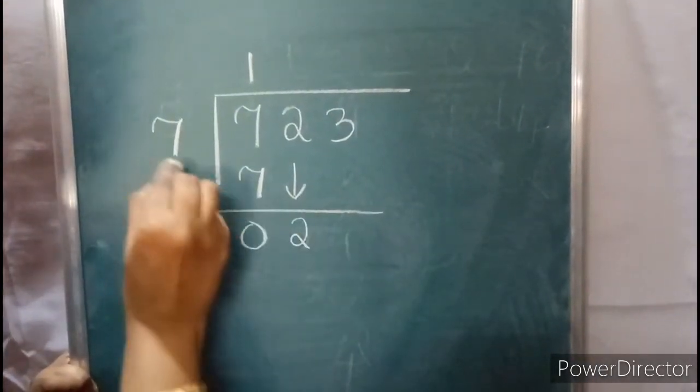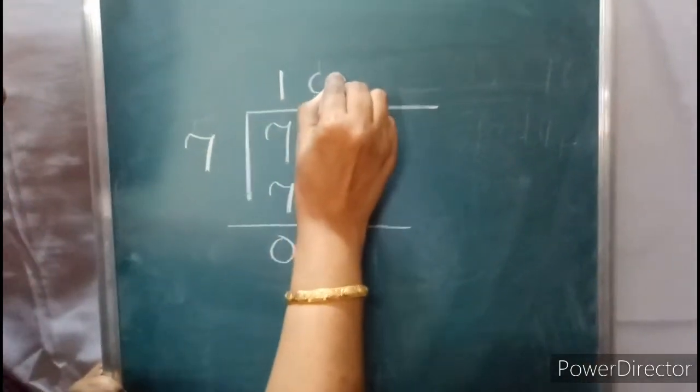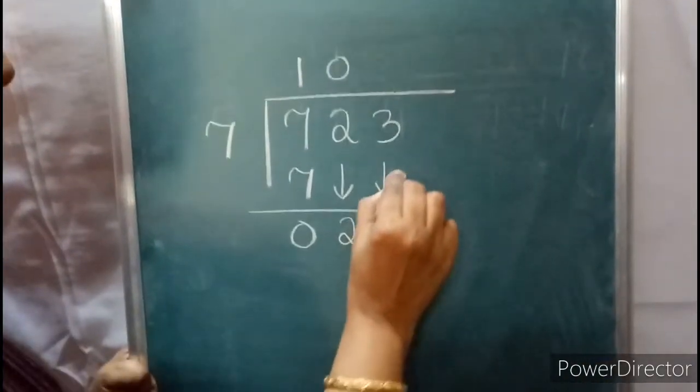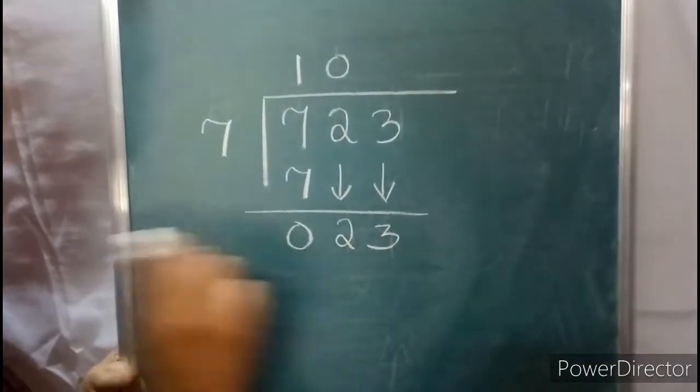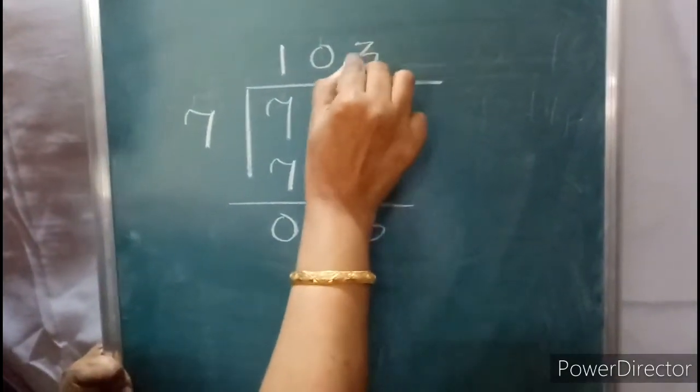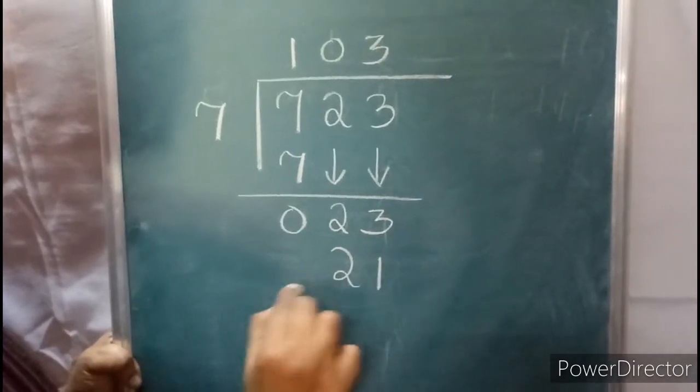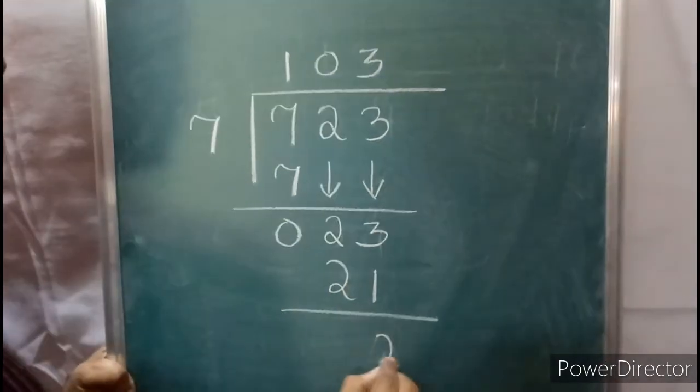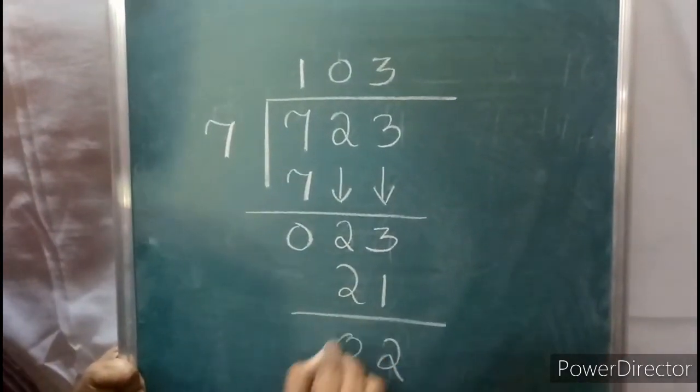Now take this 2. 2 is less than 7, so put a 0 here. Now take the next digit 3: 23. 7 ones are 7, 7 twos are 14, 7 threes are 21. Now 3 minus 1 equals 2, 2 minus 2 equals 0.